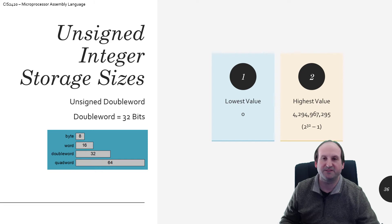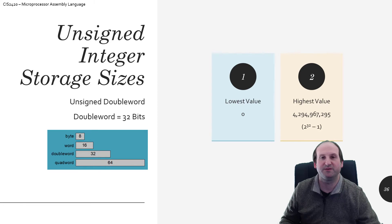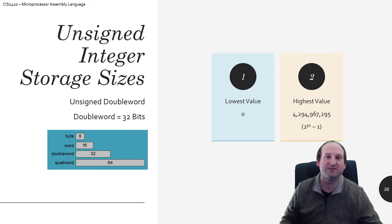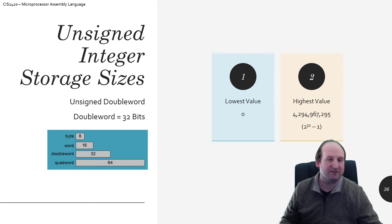Continuing on with variations of a theme: unsigned double word, 32 bits of storage. If all 32 of these switches were set to the off position, the value would be zero — that's our smallest value. But if all of these bits are set to the on position, you get the largest unsigned int used in most programming languages today: 4,294,967,295. I like to just say 4.29 billion — that is the largest value that can be stored in 32 bits of storage in an unsigned manner.